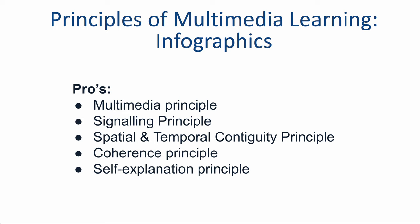Next, the signaling principle: people learn better when cues are added that highlight the key information. When infographics are learning objects, the teacher selects and highlights the most important information. The spatial and temporal contiguity principle states that people learn better when corresponding words and pictures are presented close to each other in both time and space — which is pretty self-explanatory.